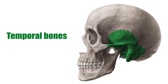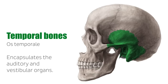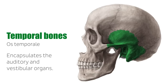The temporal bones are some of the most complex bones of the skull due to their various positions. The temporal bones form part of the middle and posterior cranial fossae, and their most important feature is that they encapsulate the auditory and vestibular organs.